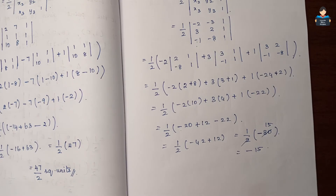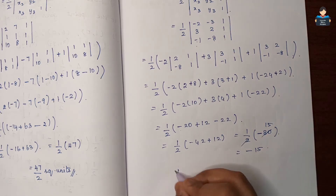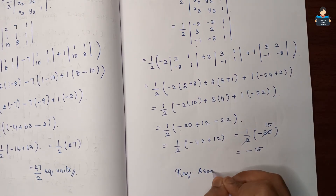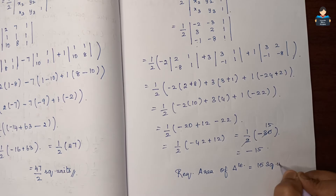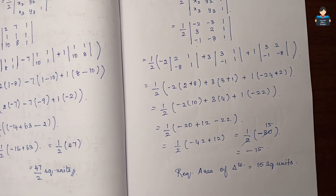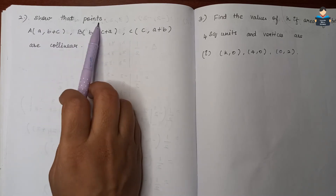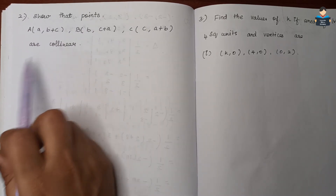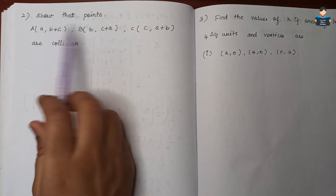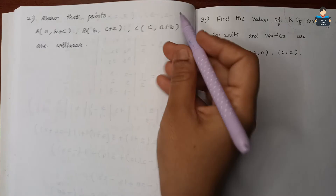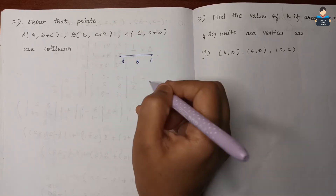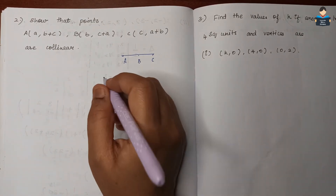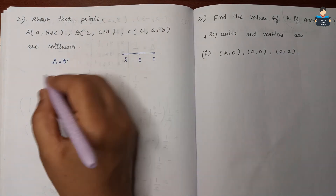Area of the triangle is always positive. So the required area of the triangle is 15 square units. Now for the collinear points problem: if points a, b, and c lie on the same line, then the determinant value will be equal to 0.